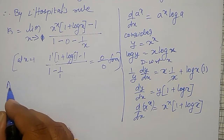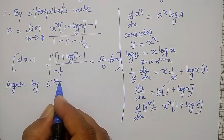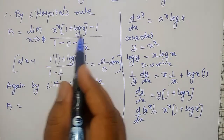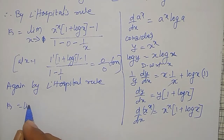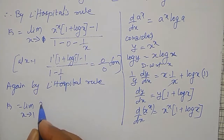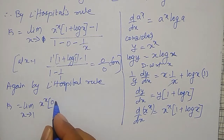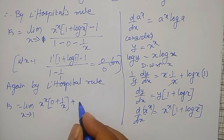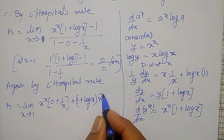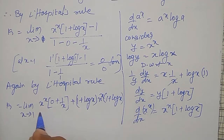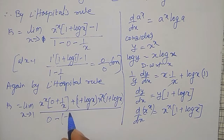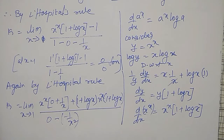Therefore again applying L'Hôpital's rule. k is equal to this — I have to differentiate again with respect to x, numerator and denominator separately. That is limit as x tends to 1: for the numerator, applying the product rule to x raised to x into 1 plus log x, we get x raised to x into differential of 1 plus log x, which is 0 plus 1 by x, minus 1 plus log x into differentiation of x raised to x, that is x raised to x into 1 plus log x.